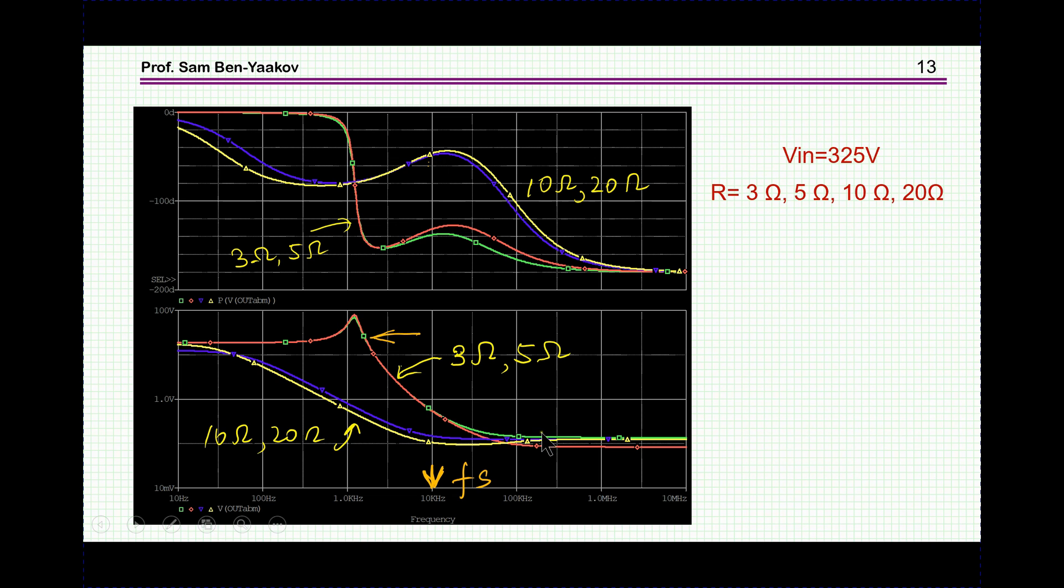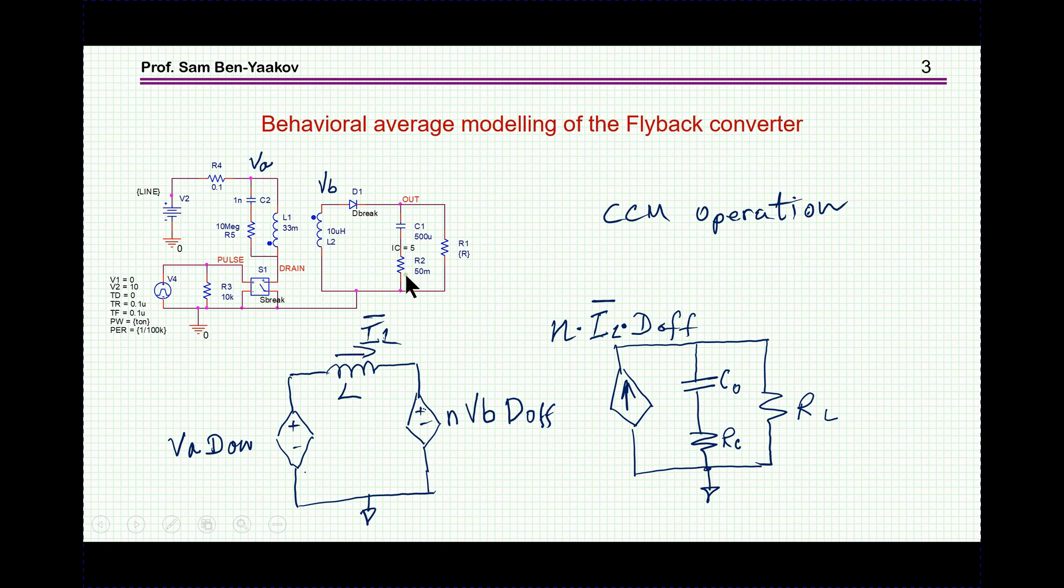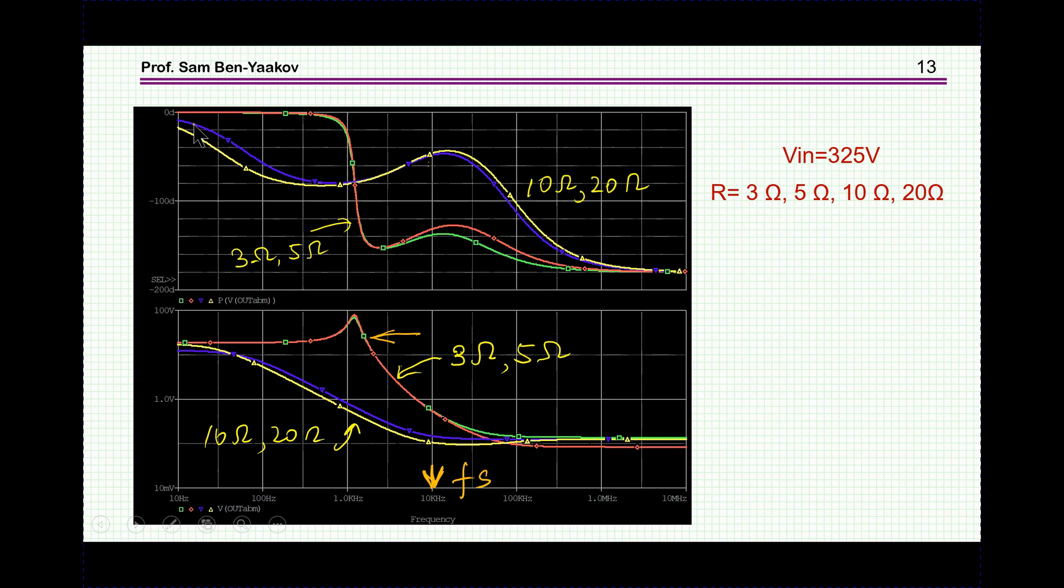So, let's see what's happening here. Well, here is the gain. 3 and 5 ohms are for the CCM, very typical of a PWM. This is the resonant point. We see here, actually, the effect of the right half plane zero, plus the ESR of the capacitor that I have added. And, of course, we see also the phase, which is starting from 0, and then goes about, just about 180 degrees or toward 180 degrees.